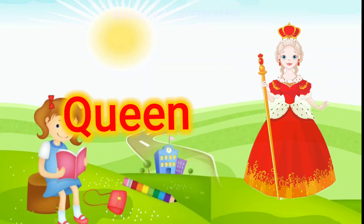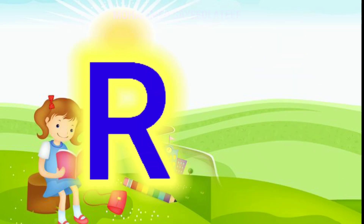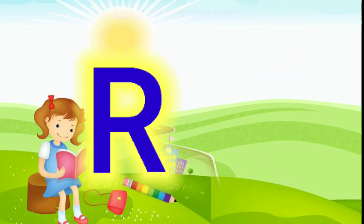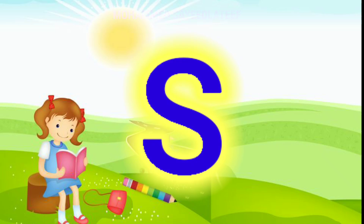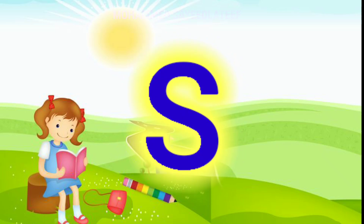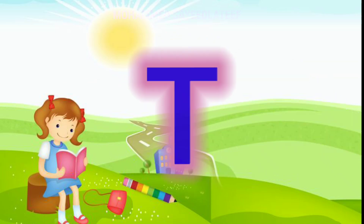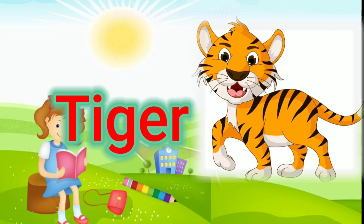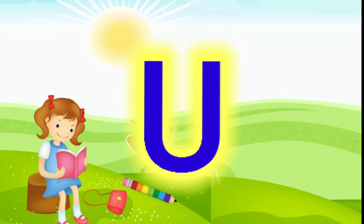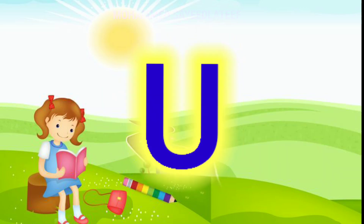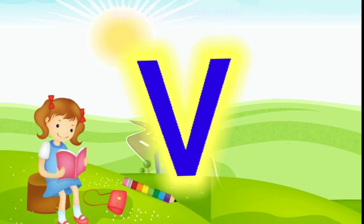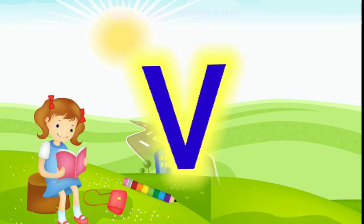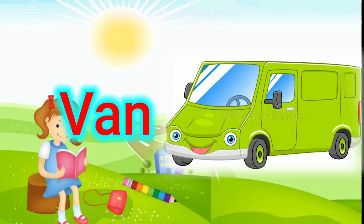Q for queen, R for rabbit, S for sheep, T for tiger, U for umbrella.